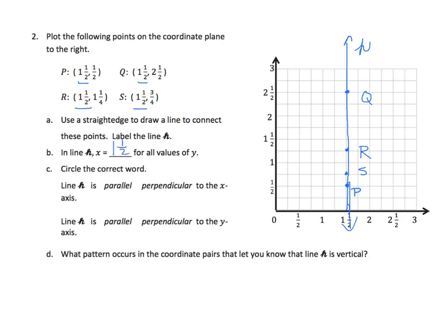Circle the word. Line H is parallel or perpendicular to the X-axis. Well, here's my X-axis, and here's my Y. And I see that it intersects at a right angle, so it would be perpendicular. Line H is parallel or perpendicular to Y. Well, the Y-axis and H will never intersect, so they're parallel.